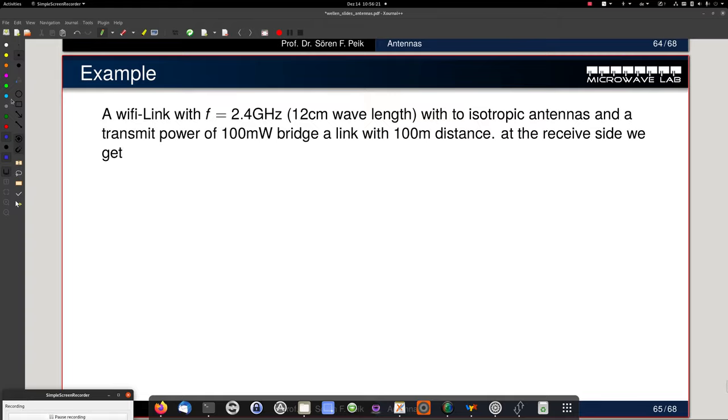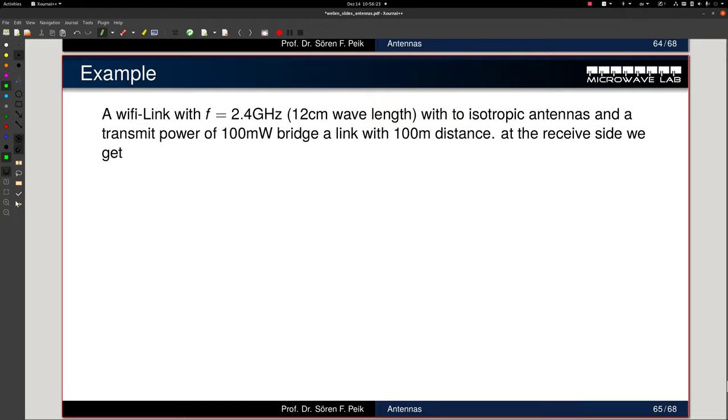In this example, I evaluate a Wi-Fi link here. A Wi-Fi link typically operates at 2.4 GHz, which relates to 12 cm wavelength when we do the calculation here. And we assume we transmit with 100 mW. That's typical. And we have 100 m distance between transmitter and receiver.